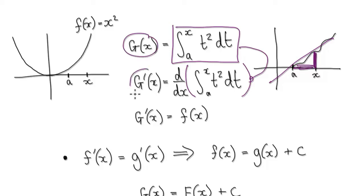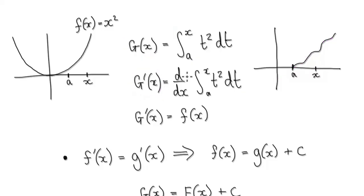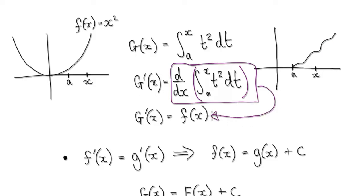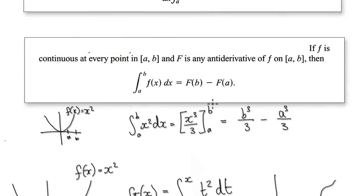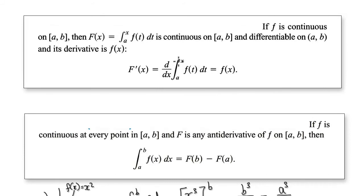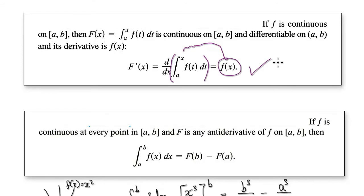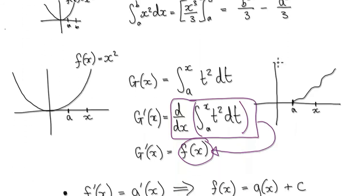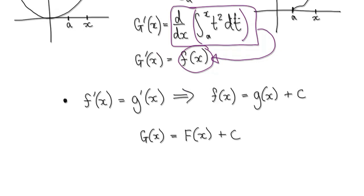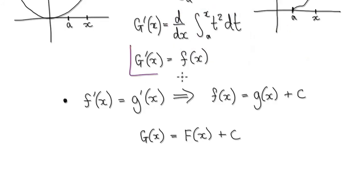When you differentiate this, we're going to call it g prime. If you look back at the fundamental theorem of calculus 1, this whole thing equals f of x — and we've seen why in the previous video. So when you differentiate this thing here, the whole thing then becomes f of x, the function itself.